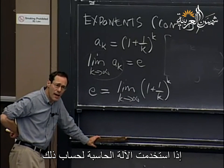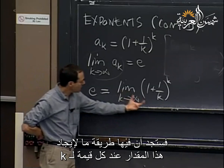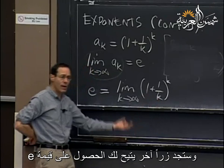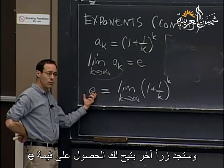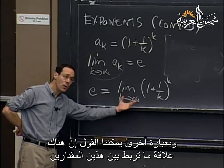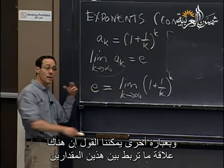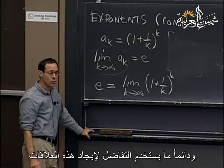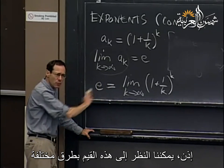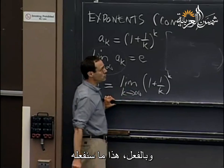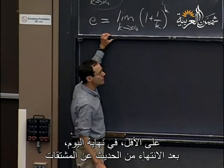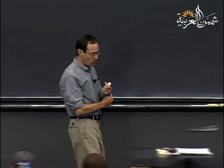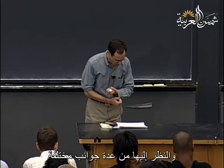If you do this on your calculators, you can program in this number and evaluate it for each K. You'll have another button to evaluate e directly. So there's a relationship between these two things, and all of calculus is about getting these relationships. We can look at things in several different ways — and that's what we're going to be doing at the end of today when talking about derivatives.